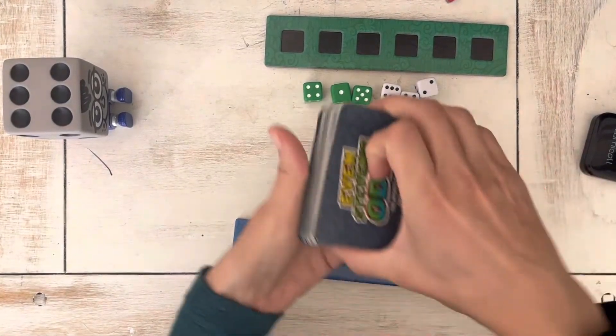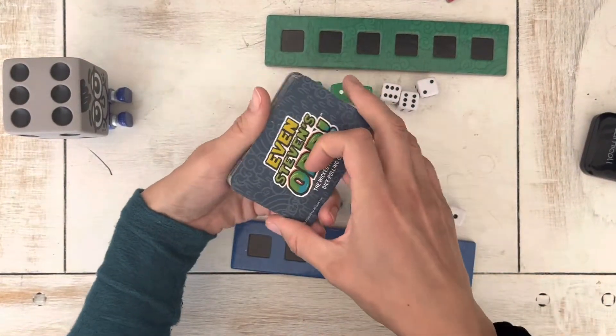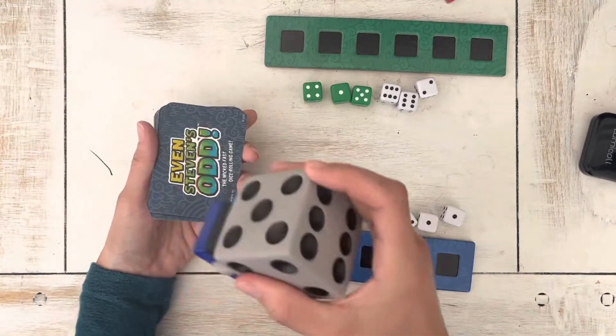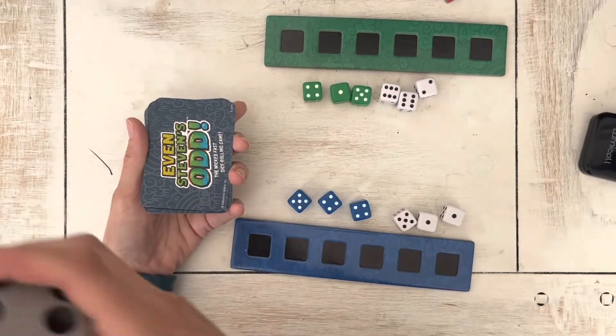And so how it works is you have this stack of cards, and it's going to have a challenge. And so the first person to complete the challenge grabs Steven and says, even Steven's odd or whatever.